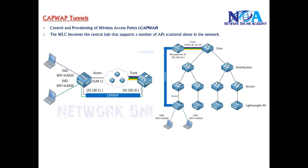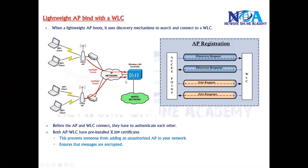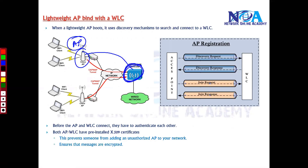CAPWAP stands for Control and Provisioning of Wireless Access Points. In the previous section we discussed authentication — how the access point binds with the WLC through the discovery process, where every access point discovers and establishes a connection with the WLC. This connection builds what we call a CAPWAP tunnel.